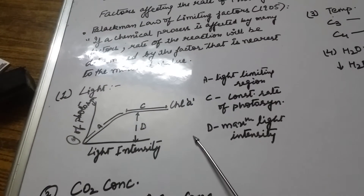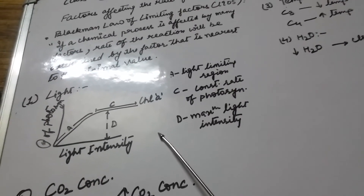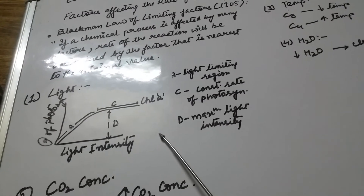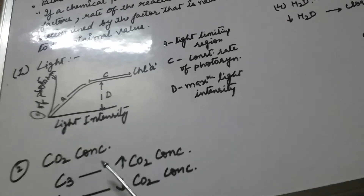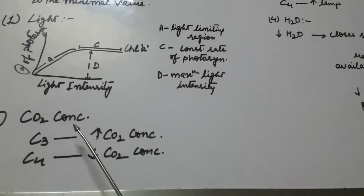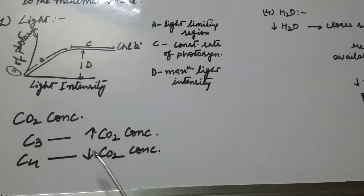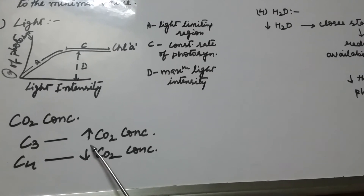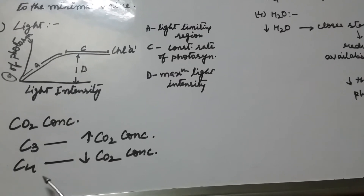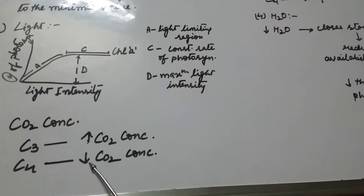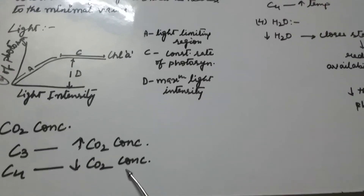Light is rarely a limiting factor in nature, except for plants present in shade or dense forests. Another factor affecting the rate of photosynthesis is the concentration of carbon dioxide. In C3 plants, a higher concentration of CO2 is required, whereas in C4 plants, a lower concentration of CO2 is sufficient to initiate photosynthesis.